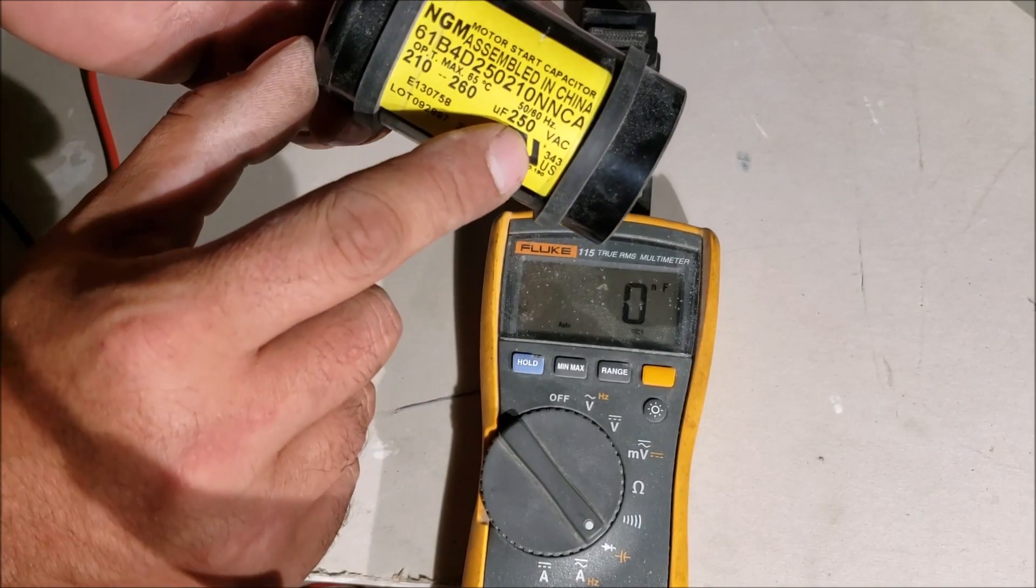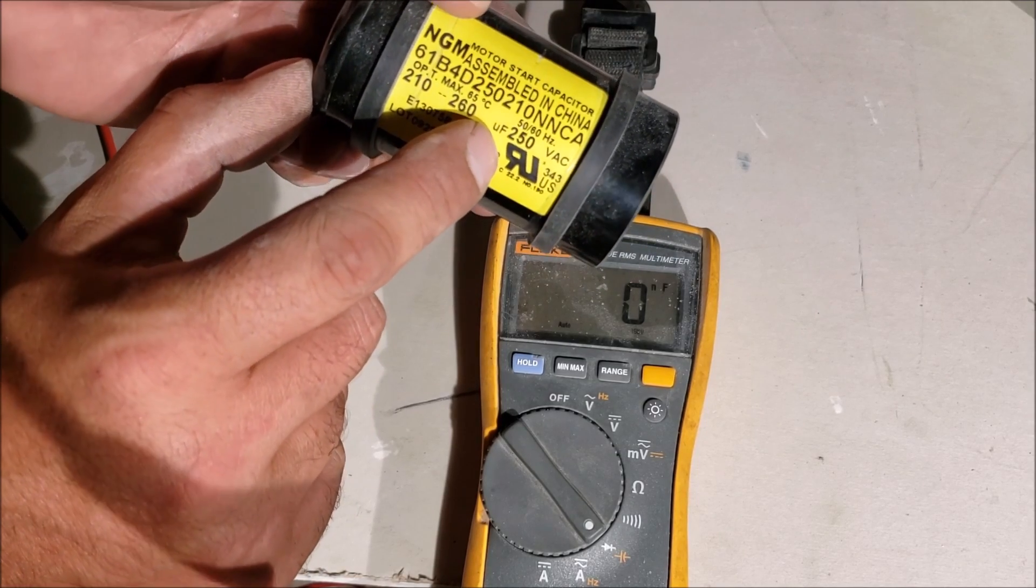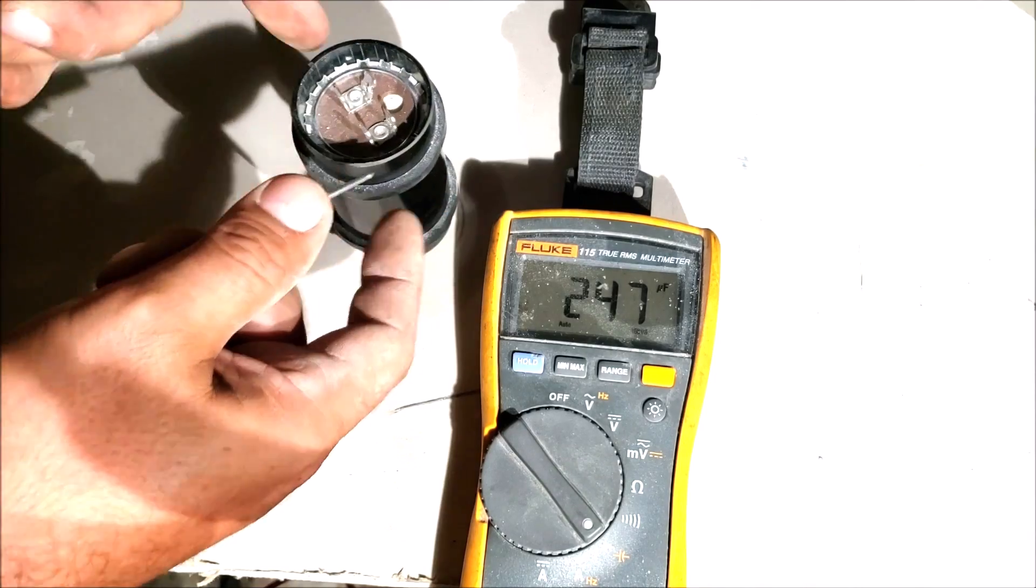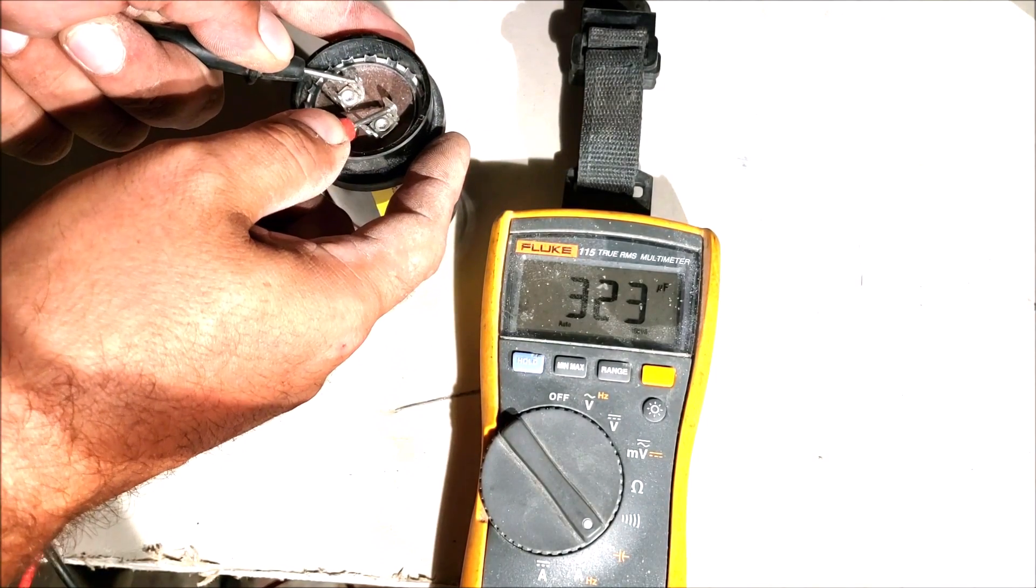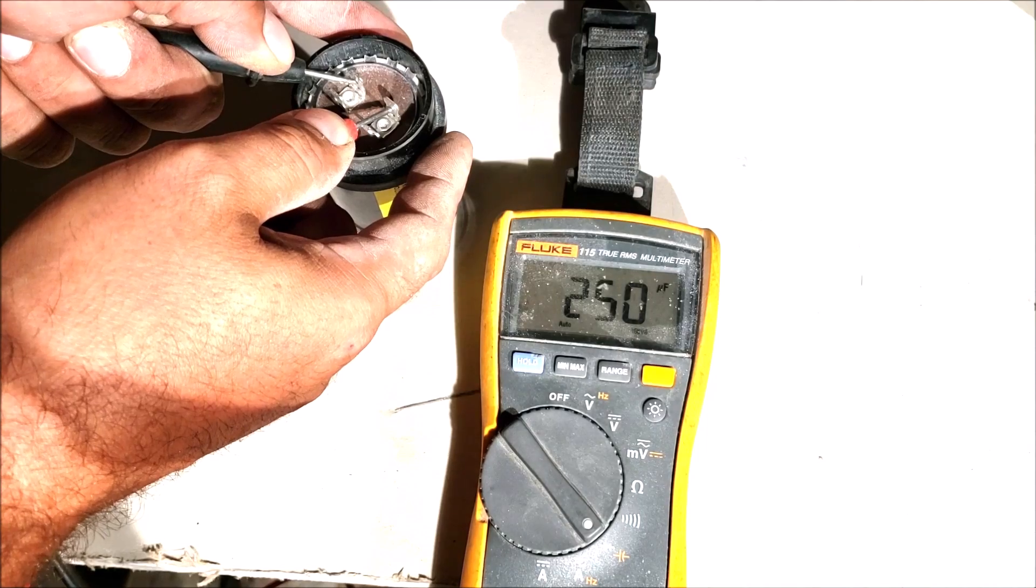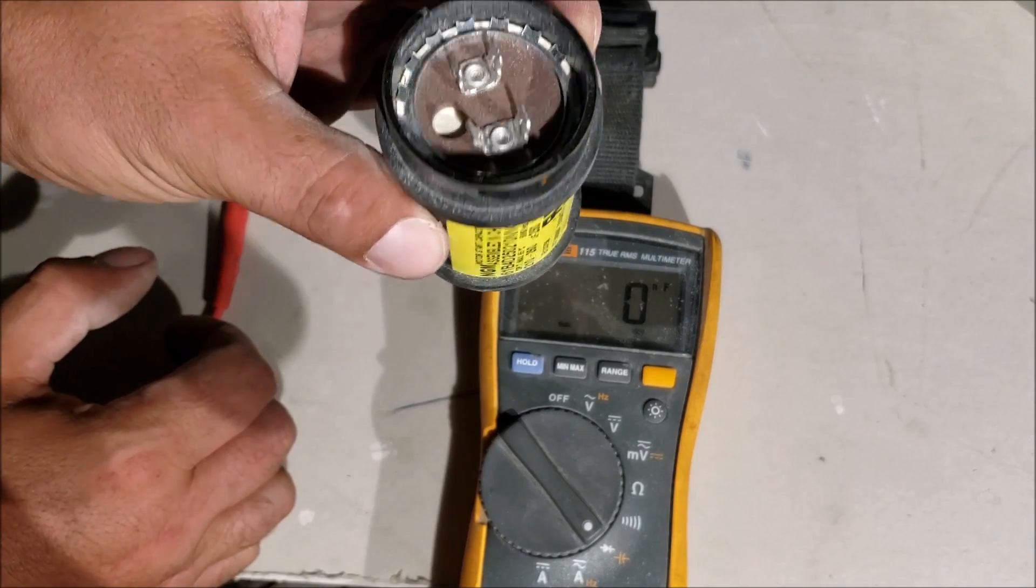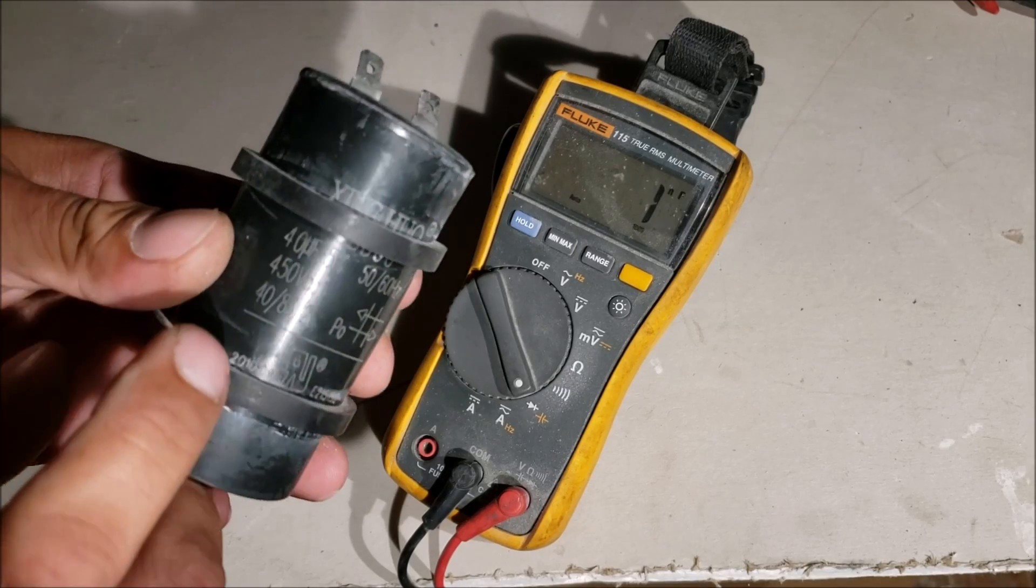This is a start capacitor on an air compressor, 210 to 260 uf, that's the microfarads. We're getting 247. Remember, flip it around, play with it. 247, we're good. This is a good capacitor.